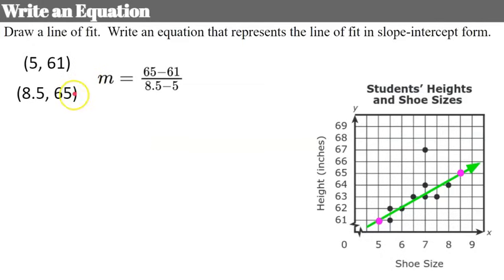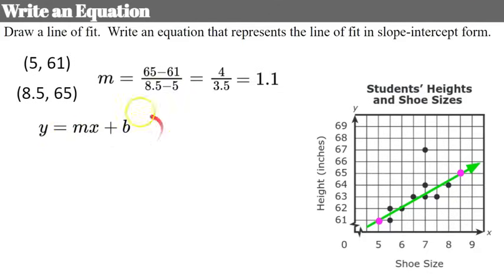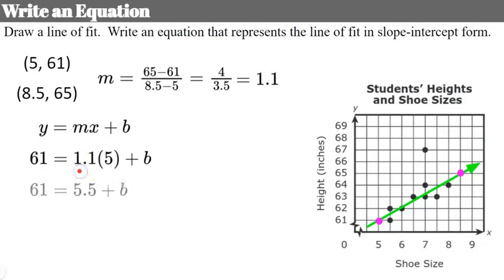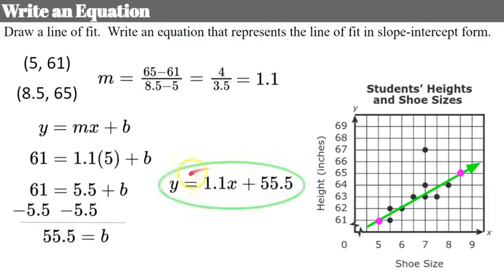Now let's find our slope: (65 − 61) over (8.5 − 5) gives us 4 over 3.5, which I'll round to the nearest tenth. Now I'll put this in slope-intercept form, replacing M with 1.1 and using the point (5, 61): when X is 5, Y needs to be 61. Solving for B: 1.1 times 5 is 5.5, then subtracting 5.5 from each side gives a Y-intercept B of 55.5. So the equation of the line of fit is y = 1.1x + 55.5.